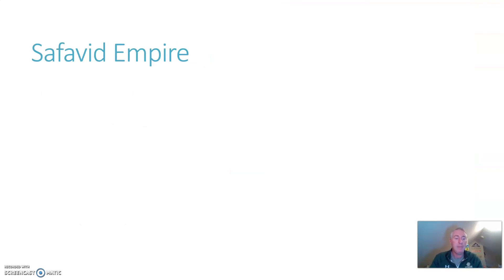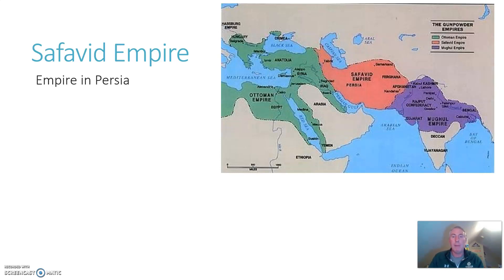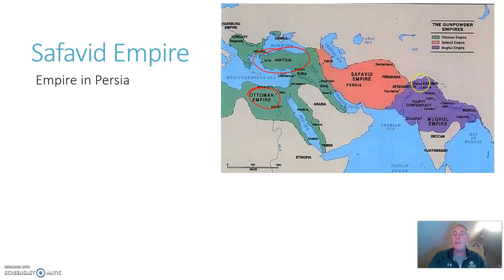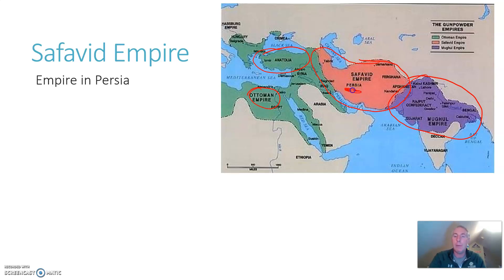Let's move on to the Safavid Empire. The most important thing to know is that we're talking about Persia — the Ottoman Empire is Turkey, and the Safavid Empire is Persia, or what today is Iran. Looking at the map, you'll see the big three Muslim empires of the time: the Ottoman Empire in green, which is mostly Turkey plus big chunks of the Middle East, Greece, and Egypt; the Mughal Empire in northern India that we talked about in the previous section; and then the big one in the middle — the Safavid Empire, covering Persia.